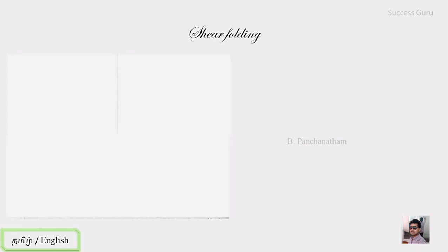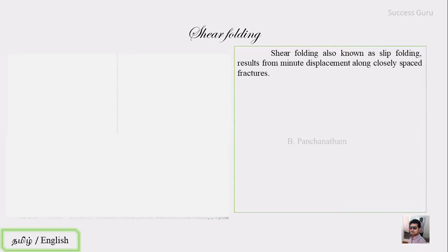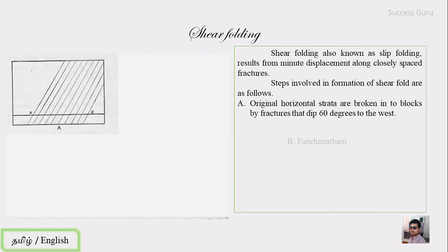This is shear folding, also called slip folding. In shear folding, there is a fracture plane. This process has four stages. In the first stage, there is a horizontal formation with fracture planes.